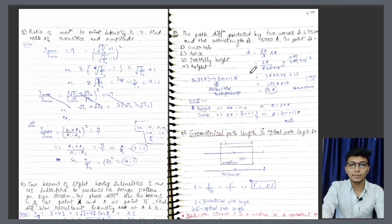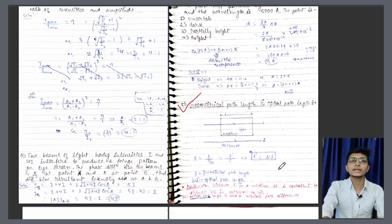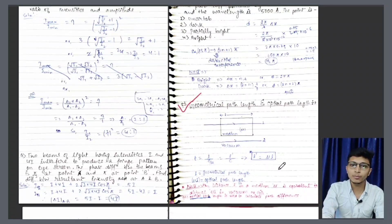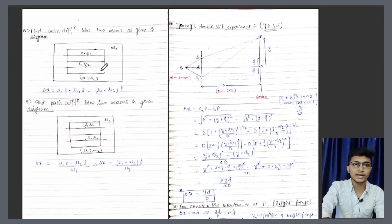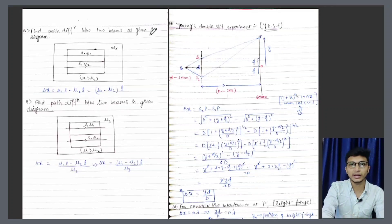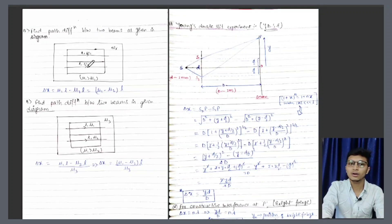Aage yahan par aur bhi kuch questions hain. Yeh jo cheez hai — geometrical path length and optical path length. Generally hamara light ek air medium mein hota hai, lekin agar air na hoke koi aur medium hota, to in that case effective path length — jo geometrical path length hai — that will be mu times of original length. So effective path length will be mu L. Aur isi based ek question dekhein: find path difference between two beams as given — dono waves ki effective length ko subtract karna hai. Yahan par mu1 diya gaya hai to effective length hogi mu1 L1, aur doosre ki mu2 L2. To path difference = mu1 L minus mu2 L.